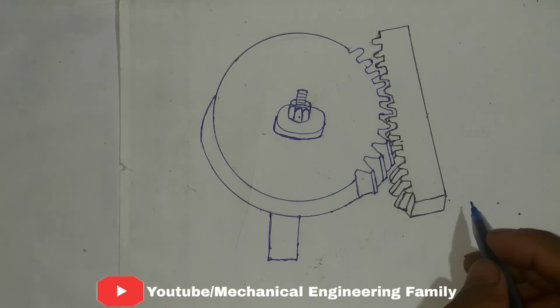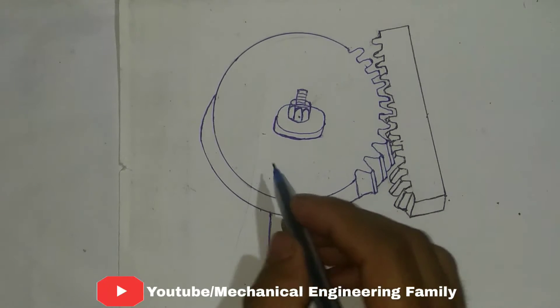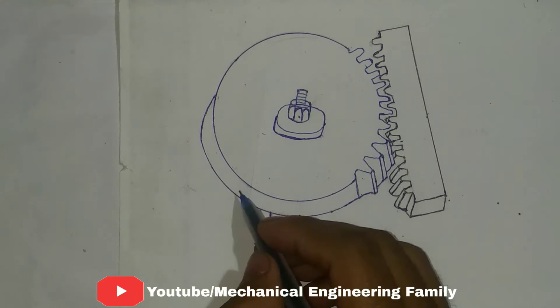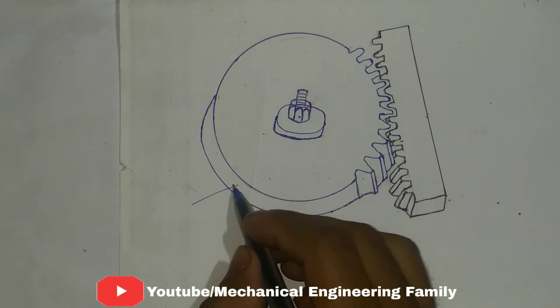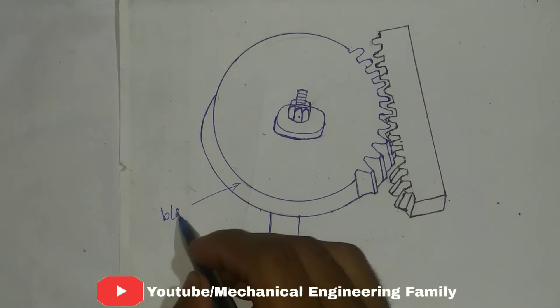This is an arrangement of gear planing process. This is called blank, on which gear teeth are to be cut.